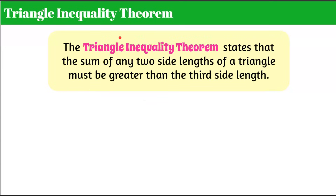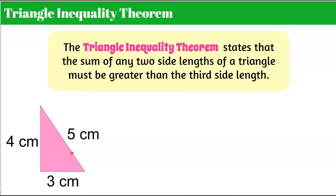Now let's talk about the triangle inequality theorem — we're going to start talking about side lengths of triangles. This theorem states that the sum of any two side lengths of a triangle must be greater than that third side. Here's a triangle with side lengths three, four, and five. Whenever you're given a picture, it may or may not be accurate — they may be trying to fool you — so we're going to verify it with the theorem. We're going to do three combinations, taking each pair.